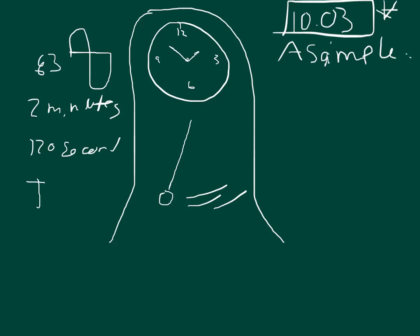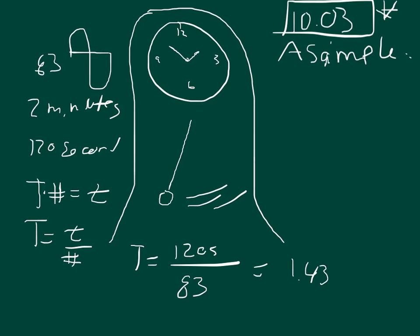So if we say that capital T is the time it takes for one complete oscillation, the time for one oscillation times the number of oscillations is equal to the total time that it took. So we can take T and we can say that it equals the total time that it took divided by the number of oscillations. And so then we would have T equals 120 seconds divided by 83. So that should equal 1.431981 seconds.